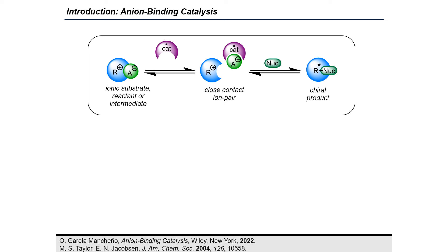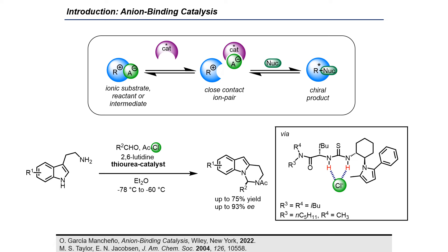The first enantioselective anion-binding reaction was done by Jacobson in 2004 with his chiral thiourea catalyst. In this acyl-Pictet-Spengler reaction, he could reach a non-symmetric excess up to 93% ee.